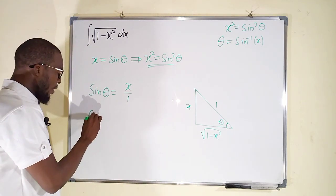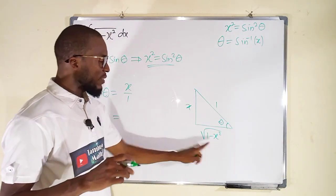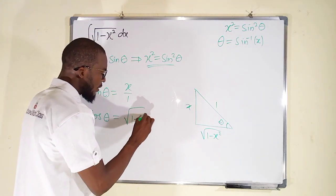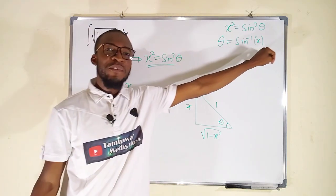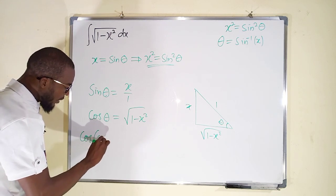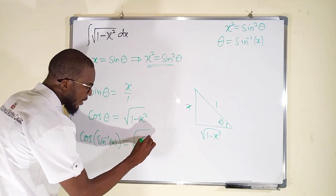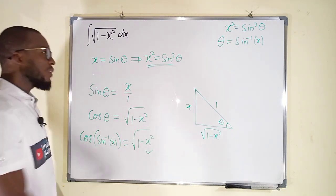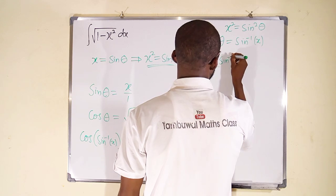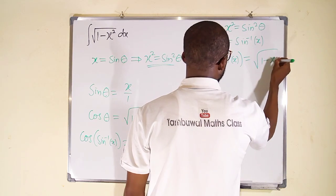So what is cos theta? Cos theta is equal to adjacent divided by the hypotenuse. It will remain square root of 1 minus x squared. But remember theta is sine inverse of x, so we can write this one as cos of sine inverse of x equal to square root of 1 minus x squared. We need this one as well.